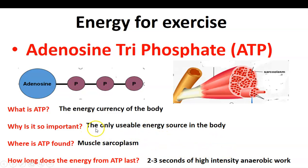These are our key foundation knowledge points with regard to adenosine triphosphate: it is the energy currency in the body, it is the only usable energy source in the body, it is stored in the muscle sarcoplasm, and it gives us two to three seconds of high-intensity anaerobic work.